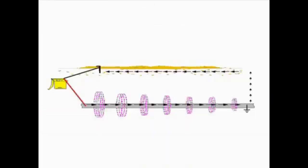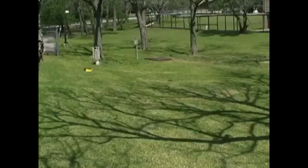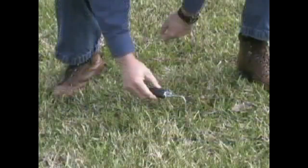The most critical concept to acquire for underground locating is the principle of signal path. You must create a complete circuit for the transmitted signal to follow. This circuit depends on three components: the target utility or metal conductor, the physical ground or dirt, and the grounding device or ground rod.